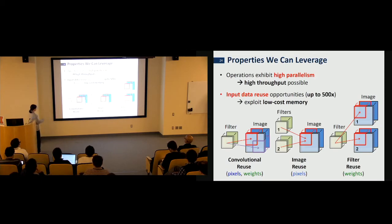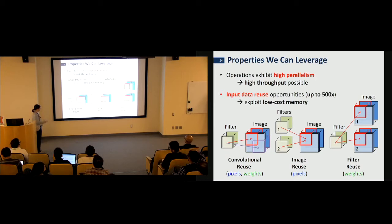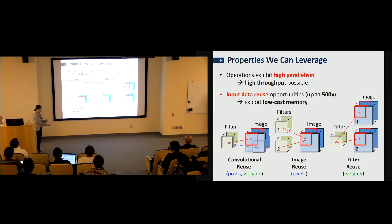There are three main forms of data reuse in CNNs. First, convolutional reuse: the same pixels and weights are used repeatedly in different combinations during 2D convolution. Second, image reuse: multiple filters are applied to the same image, so image pixels can be kept on-chip and reused. Third, filter reuse: when processing a batch of multiple images, the same filter is applied across all images, so you read the filter once and reuse it multiple times.